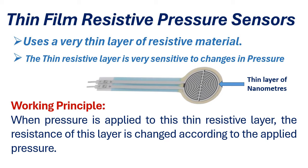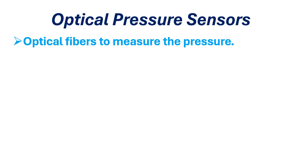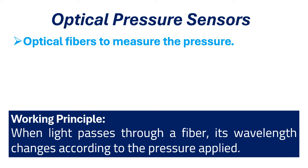This is the basic working principle of the thin film resistive pressure transmitter. Fourth is the optical pressure sensor. Optical pressure sensors use optical fibers to measure the applied pressure. When light passes through a fiber, its properties such as wavelength change according to the pressure applied.